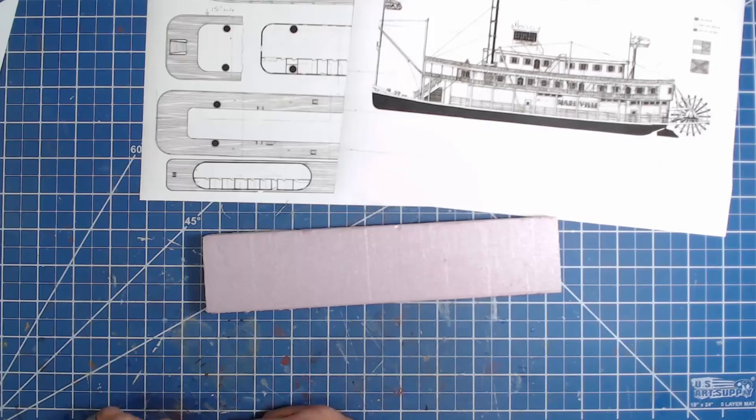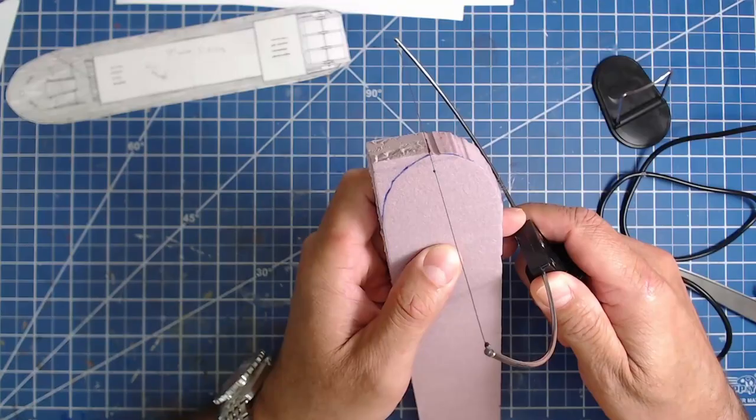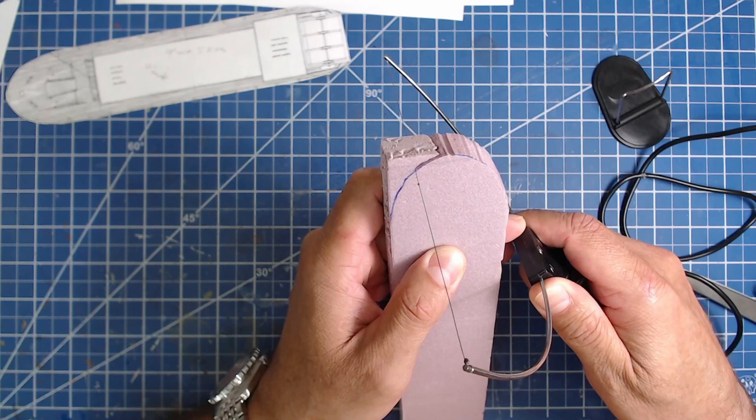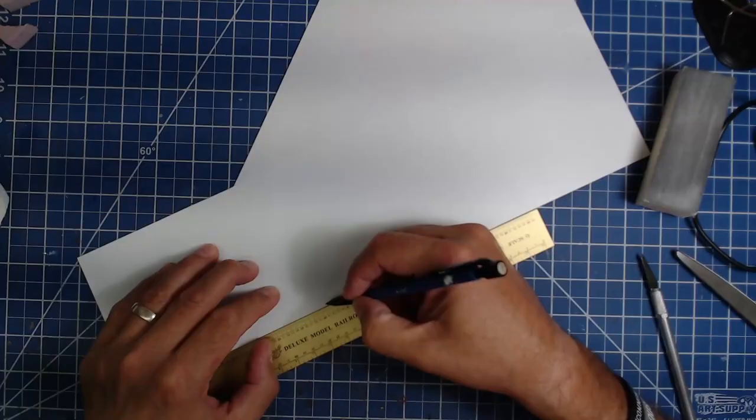We start with the paddle wheeler. The models that are the right size are the wrong scale, and the ones that are the right scale are the wrong size. So we're going to scratch build it based off some drawings. We start with a paper pattern and a piece of XPS foam, and carve it into the basic shape of the hull. After the rough shaping, it was sanded smooth, then given a coat of Mod Podge to protect it in later painting processes.